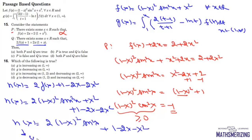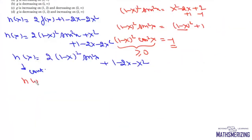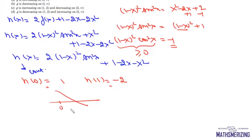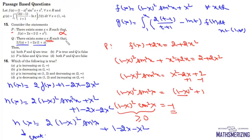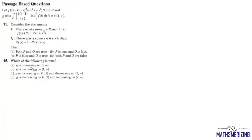h(x) is a continuous function. If we find h(0), it equals 1, and if we find h(1), it equals 0 plus 1 minus 2 minus 0, which is negative. So h(0) is positive and h(1) is negative. By the Intermediate Value Theorem, this function must cross the x-axis between 0 and 1 at least once. That means there is at least one x in the interval (0, 1) where h(x) equals 0, so statement Q is correct. The answer is: P is false and Q is true, which is option C.